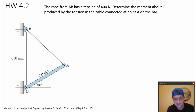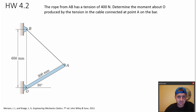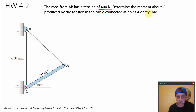All right guys, back again here with Coach Carroll. In this problem, it says the rope from A to B has a tension of 400 newtons. We need to determine the moment about point O produced by the tension in the cable connected at point A on the bar.